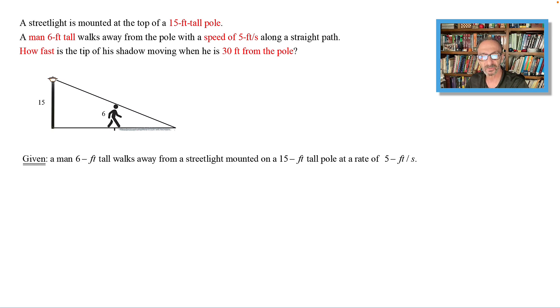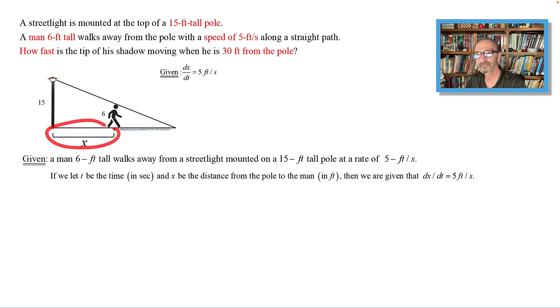Given: a man 6 feet tall walks away from the pole, which is 15 feet tall, at a rate of 5 feet per second. If we let t be the time in seconds and x be the distance from the pole to the man in feet, then we are given that dx/dt is 5 feet per second.